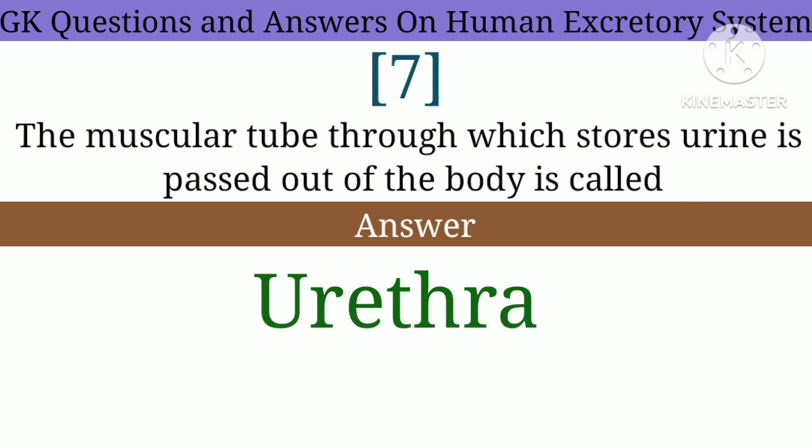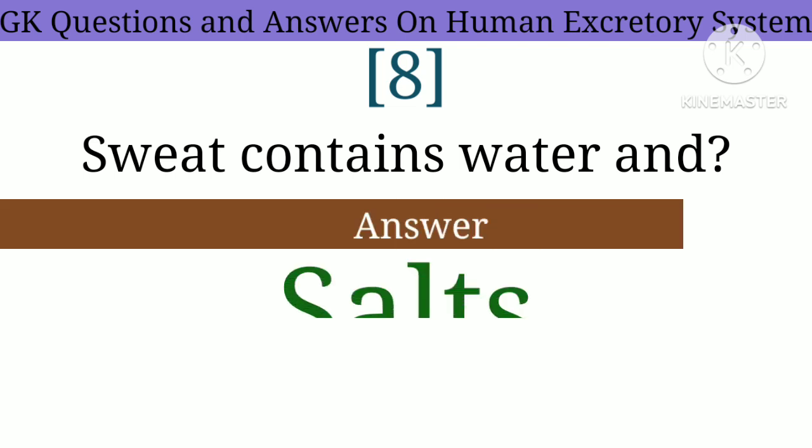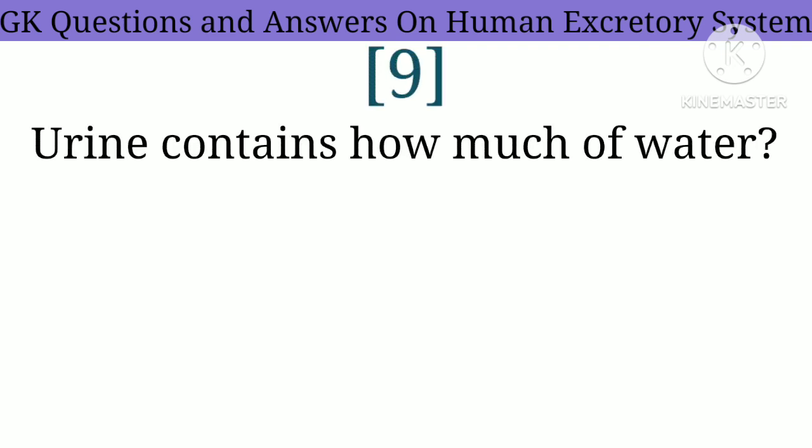Question 7: The muscular tube through which stored urine is passed out of the body is called? Answer: Urethra. Question 8: Sweat contains water and? Answer: Salts.